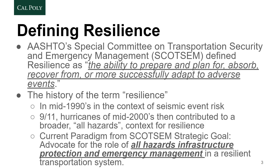After 9/11 and the hurricanes in the mid-2000s, resilience became a broader all-hazard term. Instead of a narrow focus on seismic events — where only California, Oregon, and Washington were really worried — what happened on 9/11 in 2001 and during Hurricane Katrina and Rita in the mid-2000s made it clear we need to deal with multiple hazards depending on where you are in the country. AASHTO's current strategic goal involves advocating for all-hazard infrastructure protection and emergency management in a resilient transportation system.